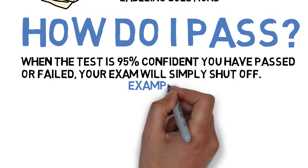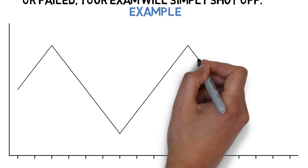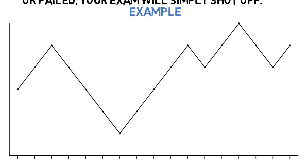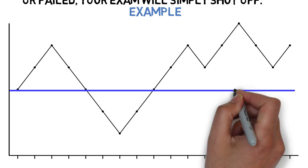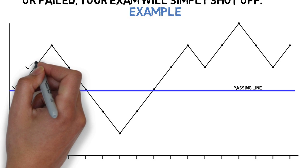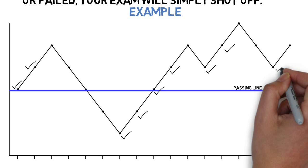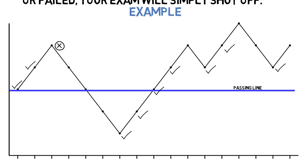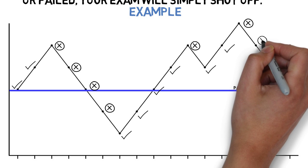Here is an example of someone taking an NCLEX exam. Each point on the graph represents where the writer stands after the previous question. The blue line represents the passing grade. Every time this individual answered a question correctly, the points on the graph moved higher. Every time this individual answered a question incorrectly, the points moved lower.